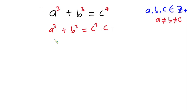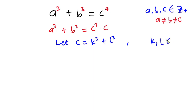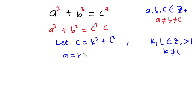From here I'm going to let c equal to k to the third power plus l to the third power, where k and l belong to integers greater than one, and k is never equal to l. Then I'm going to let a equal to kc and b equal to lc.